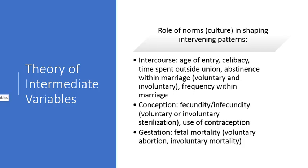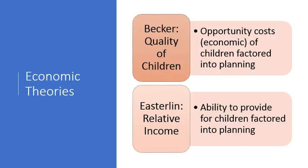These are all the immediate or intermediate variables that go between culture and actual fertility outcomes. Another family of fertility theories we might refer to as economic theories, because they tend to reduce fertility outcomes to economic causes, such as Becker's quality of children theory, where people consider the opportunity costs of having children — if they think it's too expensive they are less likely to have children, and if they think it's worthwhile economically, they'll go for it. Easterlin uses a relative income argument to look at the ability to provide for children, not just simply the opportunity cost, but the ability to provide for them.